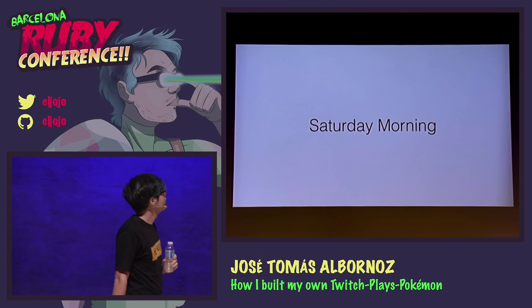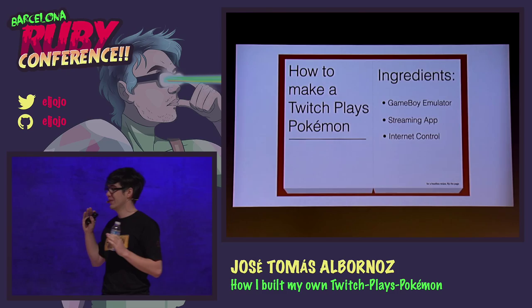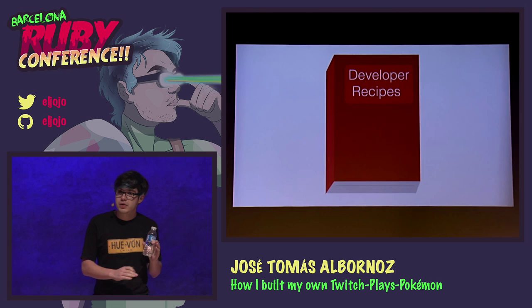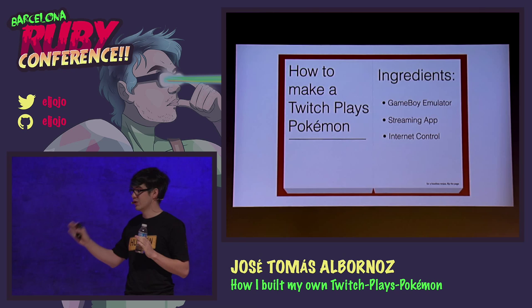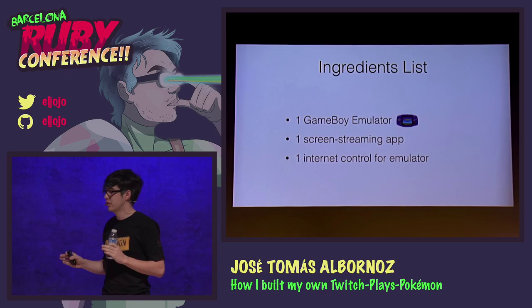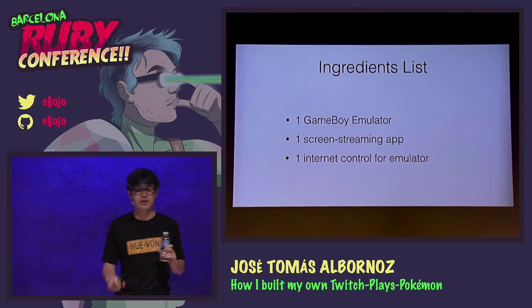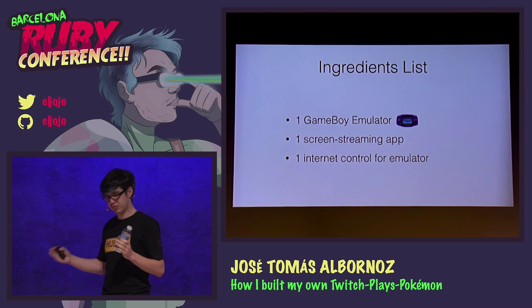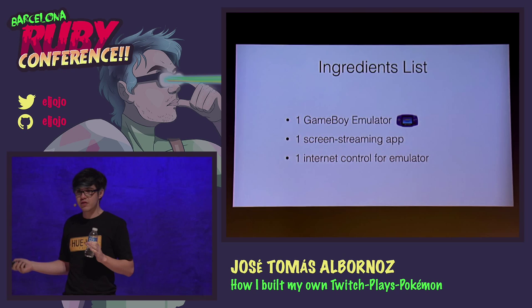Saturday morning, I woke up early and went to my bookshelf — not an ops cookbook, but more of a developer cookbook — and I headed to the 'how to make a Twitch Plays Pokemon' recipe. The ingredients list reads: we need one Game Boy emulator, one screen streaming application, and one Internet control for the emulator. For the Game Boy emulator, I already knew Visual Boy Advanced, so that was simple — just a regular C Game Boy emulator. For the screen streaming, I had no idea how to do it, but I didn't really care because it was probably trivial, so I just skipped it.